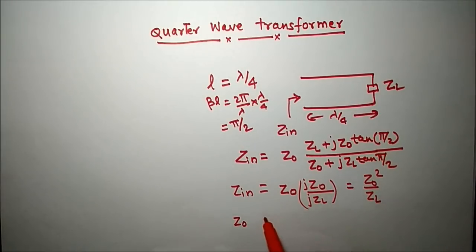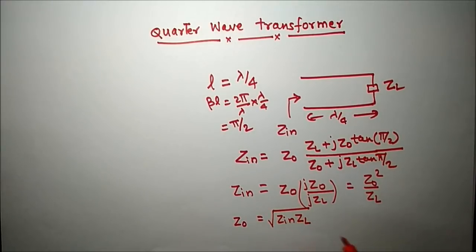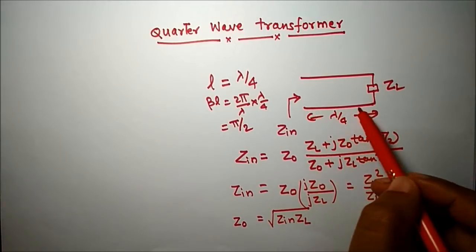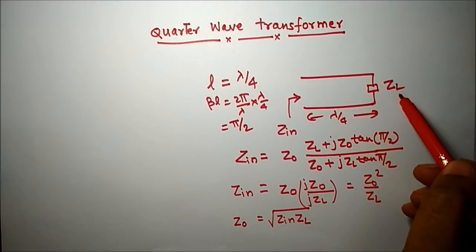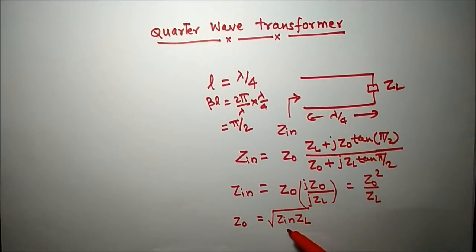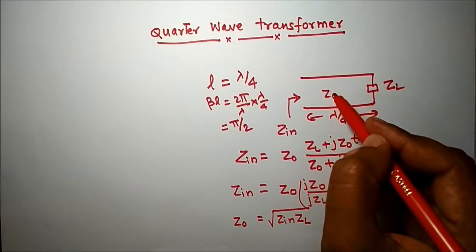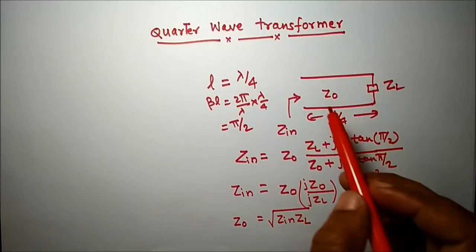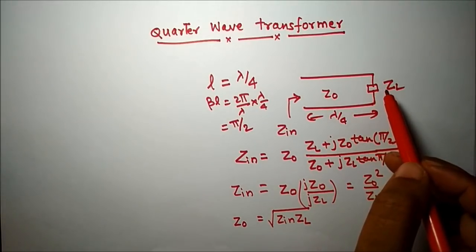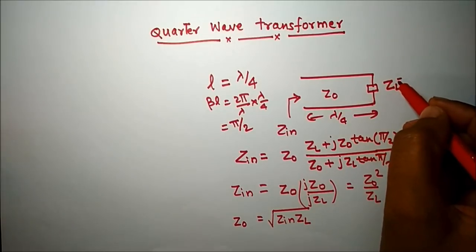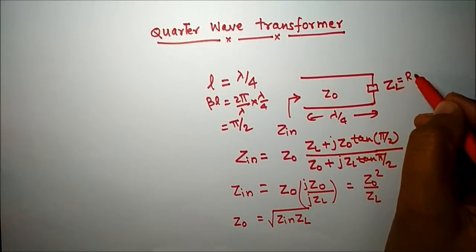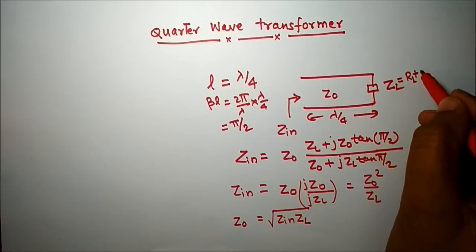So the input impedance is Z0² / ZL, which means the characteristic impedance Z0 equals the square root of ZIN times ZL — the geometric mean of input and load impedance — provided the load impedance is purely resistive, i.e., in the form RL + j0.